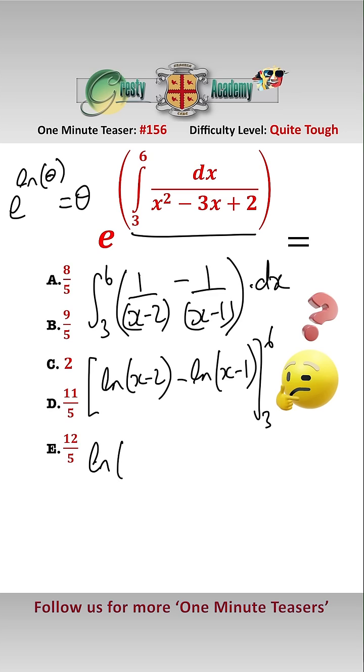And expanding that gives us log of 4 minus log of 5 minus brackets log of 1 minus log of 2. Well, log of 1 is 0.